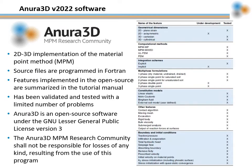Let's introduce the basic characteristics of the Anura3D software. Anura3D is a 2D and 3D implementation of the material point method. Different formulations are implemented for the simulation of the physics involved in soil-water structure interaction problems involving large deformations. The source files are programmed in Fortran. The features implemented in the source code are summarized in the tutorial manual, distinguishing between those features that have been validated and tested and those that are under development.